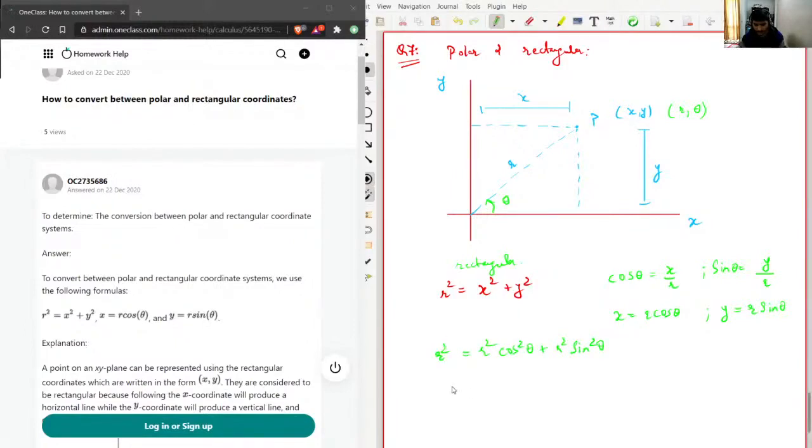And then we can write 1 equals cos squared theta plus sine squared theta, which is the property of trigonometry also.